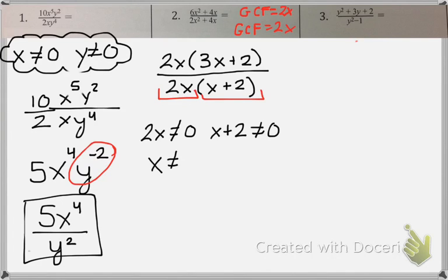So if I solve it, I get x can never equal 0 and x can never equal negative 2. Those are my two restrictions.